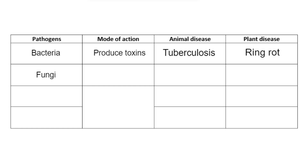The next pathogen we're going to look at is fungi. Fungi are eukaryotic organisms and one of the main things they do is spread by making spores. A lot of organisms that get infected by fungi is usually as a result of coming into contact with the spores, and once conditions are right they will start reproducing.